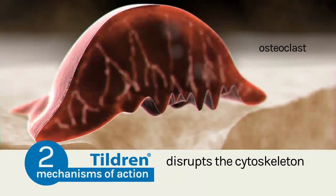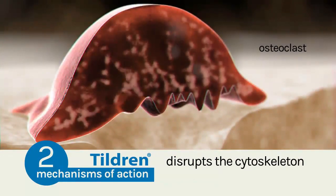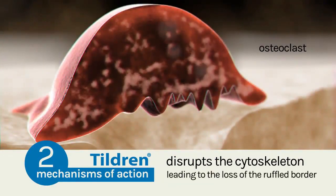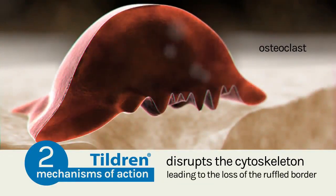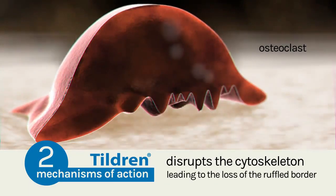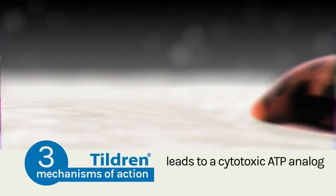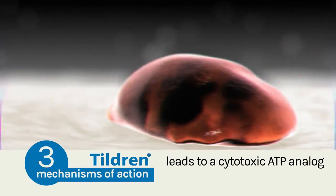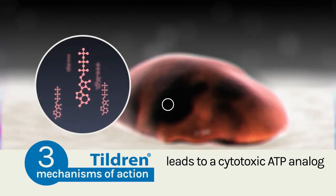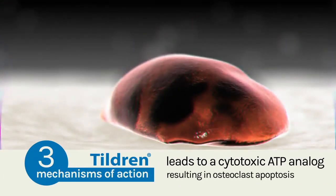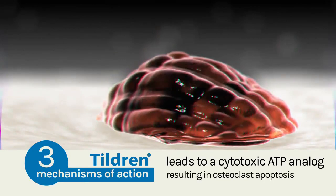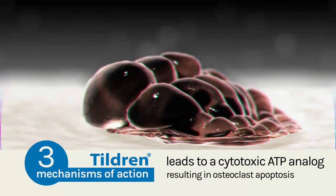Second, Tildrin disrupts the cytoskeleton, leading to the loss of the ruffled border. Third, Tildrin causes the formation of a cytotoxic ATP analogue, resulting in osteoclast apoptosis in areas of excessive osteoclastic activity.